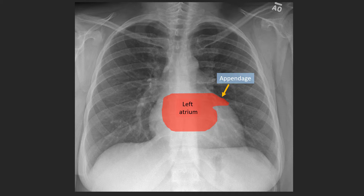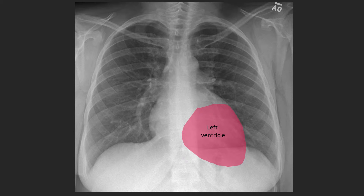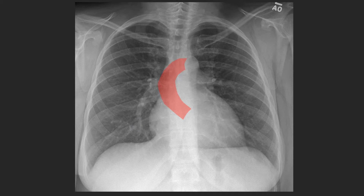Blood leaves the left atrium via the mitral valve, seen in purple, which is roughly at the same latitude as the tricuspid valve but more laterally to the left — remember the tricuspid valve overlies the spine. Blood is now in the left ventricle, normally the largest and thickest chamber, which forms the majority of the left cardiac contour. Blood then leaves via the aortic valve, seen here in yellow, which is located at the dead center of the heart, slightly higher than the mitral and tricuspid valve planes, just off midline to the left, and oriented toward the left shoulder.